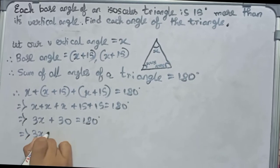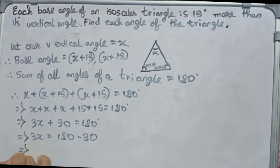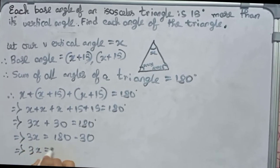Rewrite: 3x equals to 180 degrees minus 30, so it becomes 3x equals to 150.